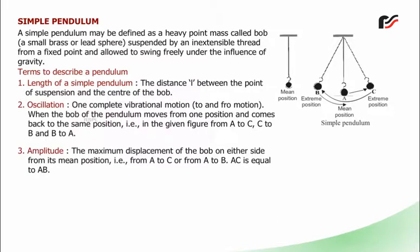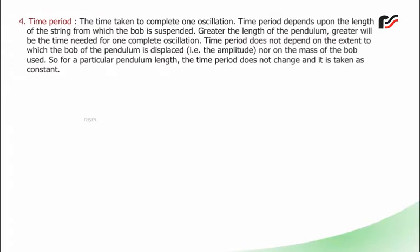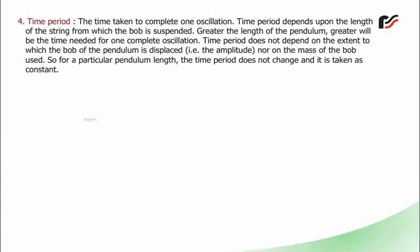3. Amplitude — the maximum displacement of the bob on either side from its mean position, i.e., from A to C or from A to B; AC = AB. 4. Time period — the time taken to complete one oscillation. Time period depends on the length of the string: greater the length, greater the time for one complete oscillation. Time period does not depend on the amplitude or the mass of the bob. So for a particular pendulum length, the time period is constant.